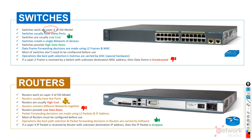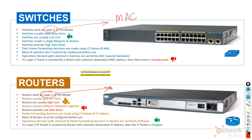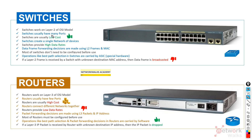Switches work on Layer 2 of the OSI model, and routers work on Layer 3. This means switches work with MAC addresses — the physical addresses of each port — while routers deal with logical addressing, specifically IP addressing. Switches usually have many ports and routers have few ports.